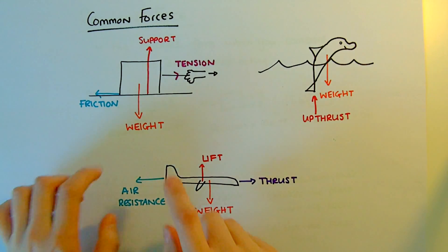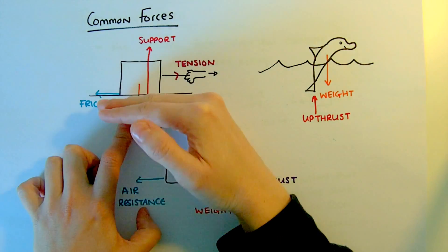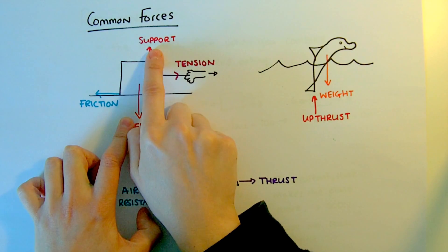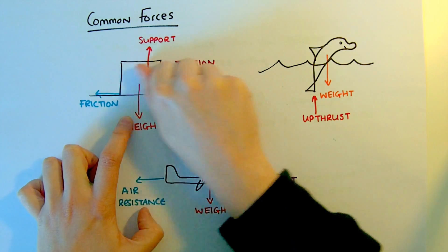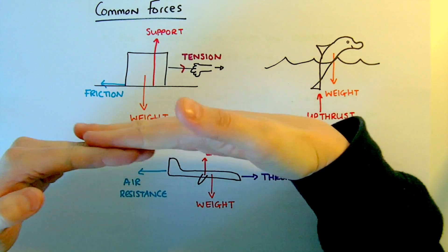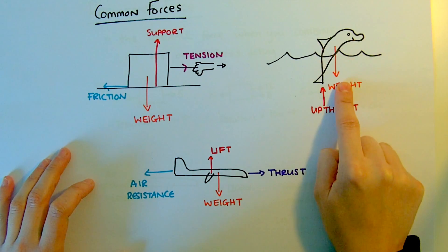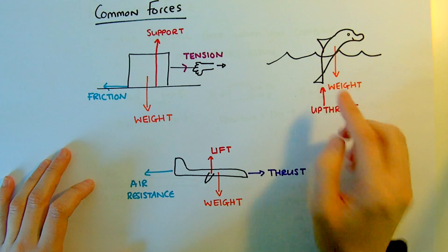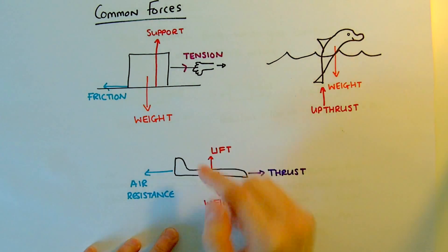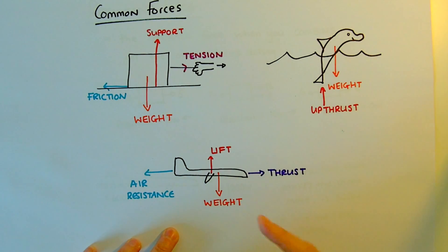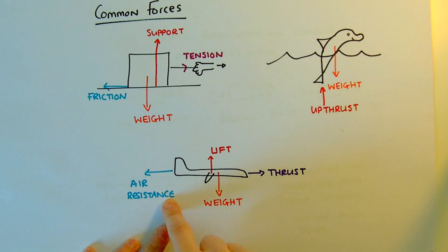Some common forces you need to know: weight is the downwards force because of gravity. When an object is on a solid surface, the surface pushes back up — that's called a support force. A pulling force in a string, rope or rod is called tension. Friction occurs where two surfaces meet and pushes back against the direction the object's moving. All objects on Earth have weight because of gravity. If the object is in water, the upward force is called upthrust; in the air, the upward force keeping something up is called lift. The driving force of an engine is called thrust force. If something's moving through the air, the air creates a drag force called air resistance.